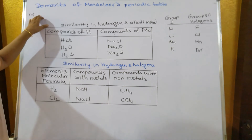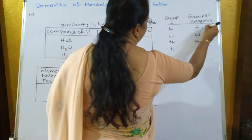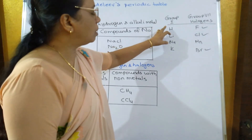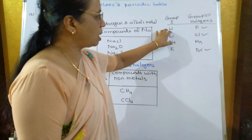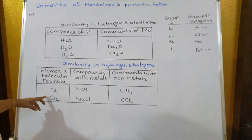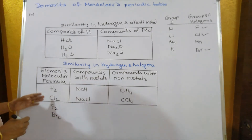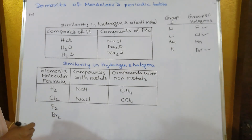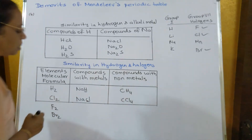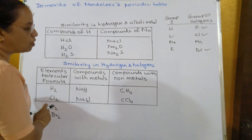The fourth demerit was the placement of hydrogen. Hydrogen is in group 1, and halogens — fluorine, chlorine, bromine, iodine — are in group 7. He found that the molecular formulas of group 1 and halogens are very similar. For example, the molecular formula of hydrogen is H2, chlorine is Cl2, fluorine is F2, bromine is Br2. There was similarity in the chemical properties of hydrogen and halogens — hydrogen combines with sodium to form NaH, and chlorine also combines with sodium to form NaCl.